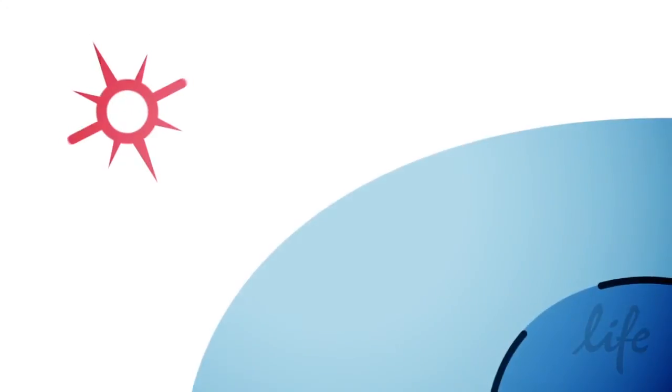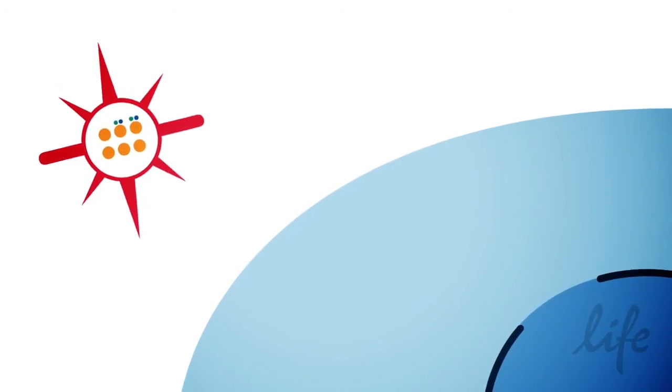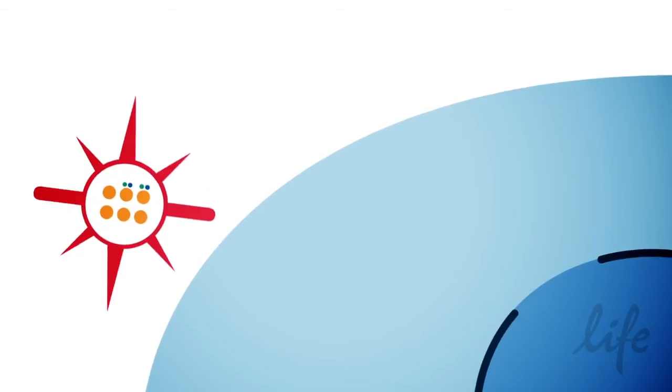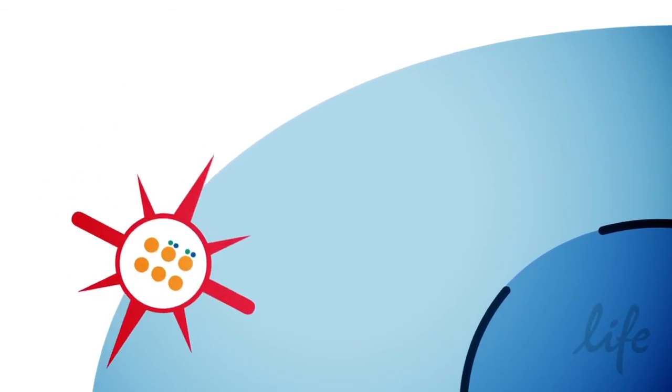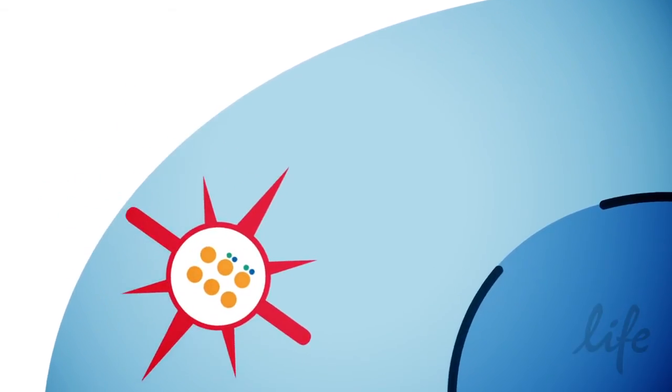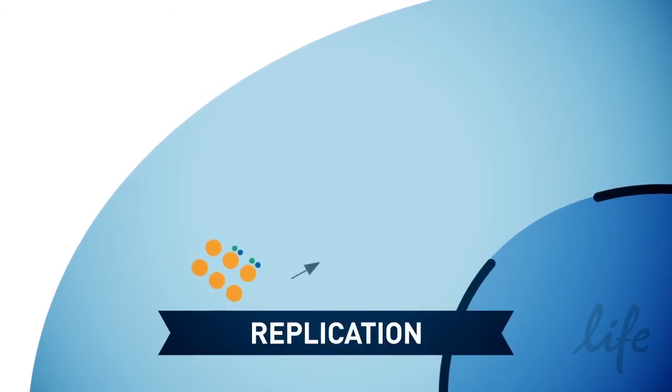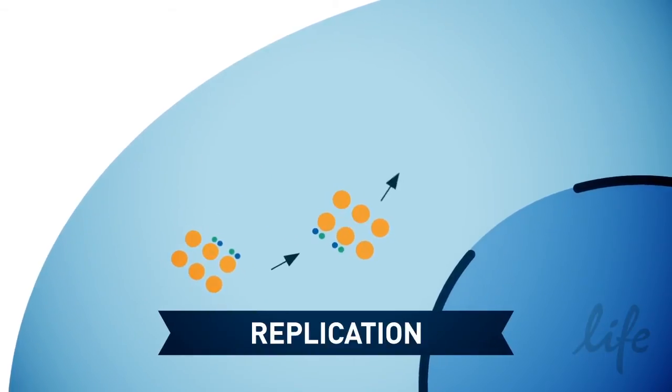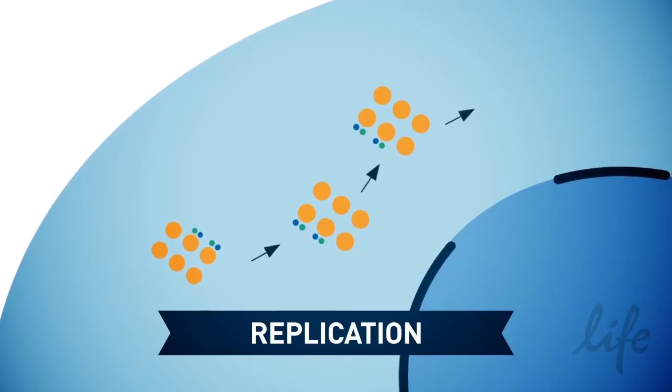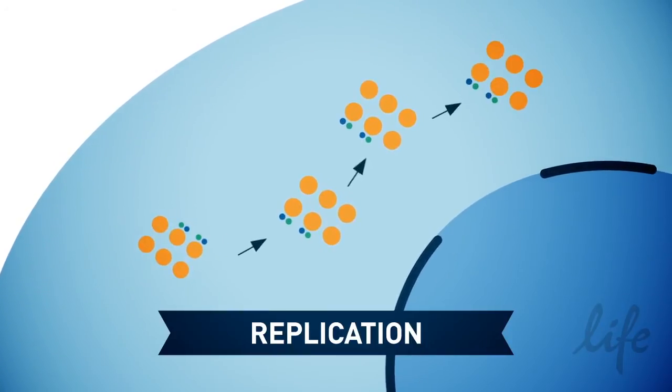On the other hand, Sendai virus is a single-stranded negative sense RNA virus that replicates in cytoplasm. This means it does not integrate into the host genome. Sendai virus replicates independent of cell cycle, unlike other approaches where the exogenous genes are expressed only as the cell divides.